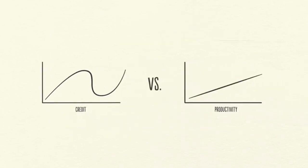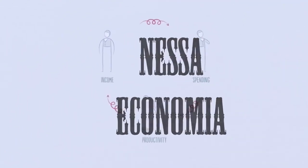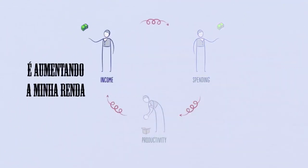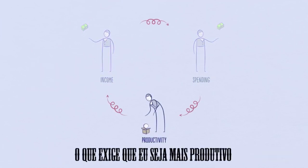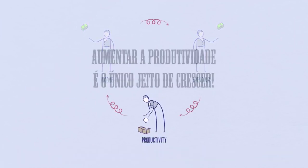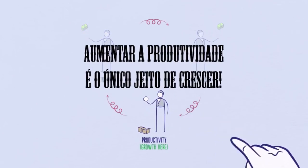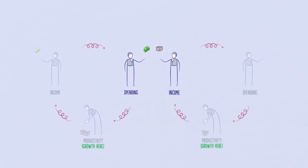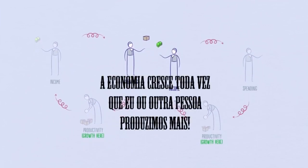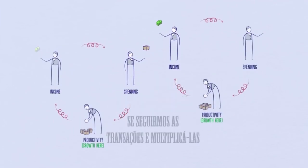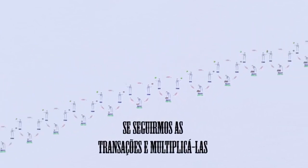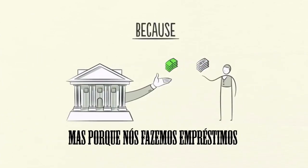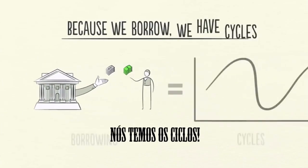Let's for a second imagine an economy without credit. In this economy, the only way I can increase my spending is to increase my income, which requires me to be more productive and do more work. Increased productivity is the only way for growth. Since my spending is another person's income, the economy grows every time I or anyone else is more productive. If we follow the transactions and play this out, we see a progression like the productivity growth line. But because we borrow, we have cycles.